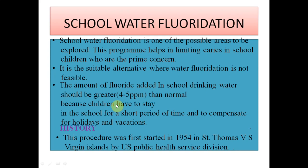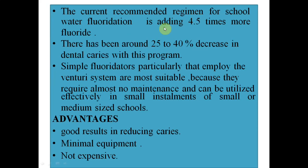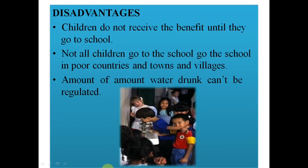School water fluoridation typically uses three to five ppm to compensate for the short period of stay at school, holidays, and vacations. It first started in 1954 at Saint Thomas, Virgin Islands. It gives a reduction of 20 to 40 percent. Advantages include minimal equipment needed and lower cost compared to community fluoridation.